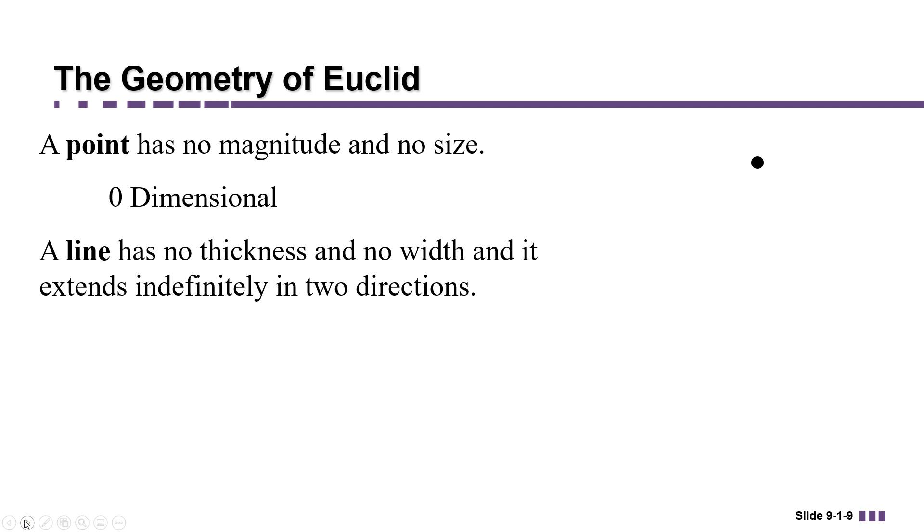A line, on the other hand, while it has no thickness and no width, extends indefinitely in two directions. We draw it with arrows at each end in order to indicate that it continues forever, and it's considered to be one-dimensional.